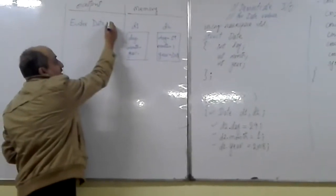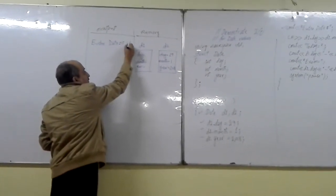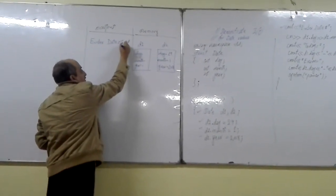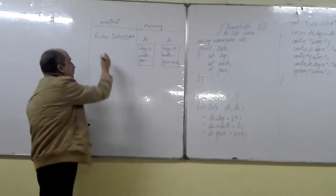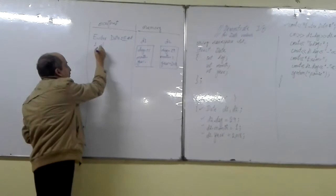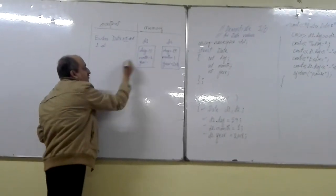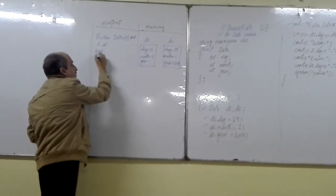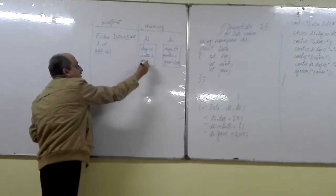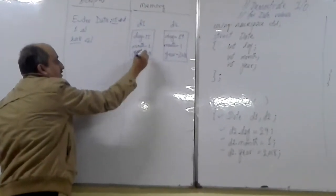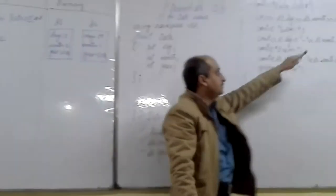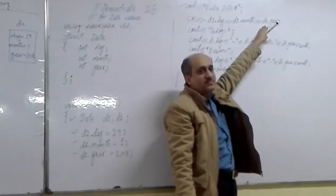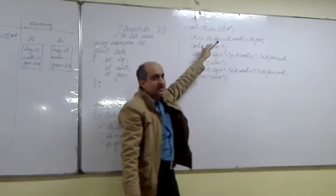If the user types, let's say 15, first user will type 15, 15 will be saved in day. Then 1, user will press enter, 1 will be saved in month. Then user will type 2018, 2018 will be saved in year of the D1 variable. Okay, pay attention.